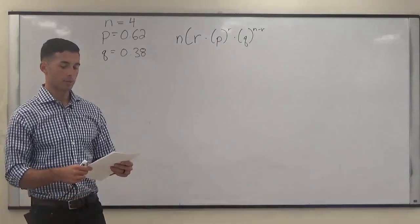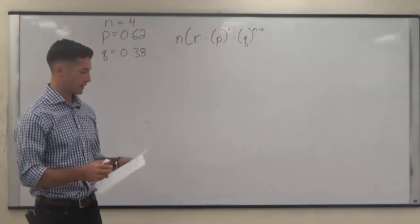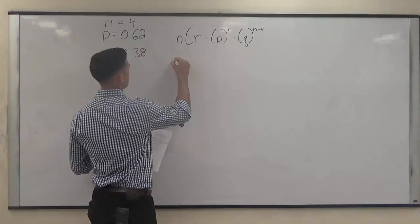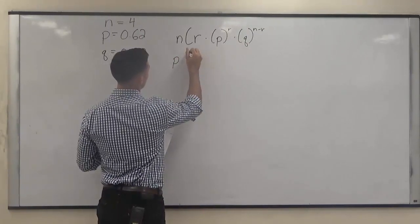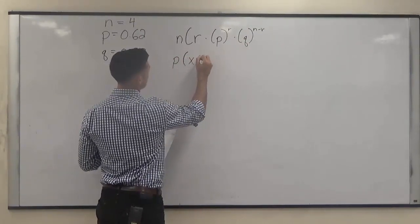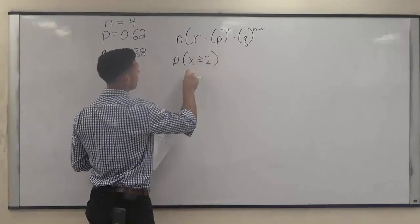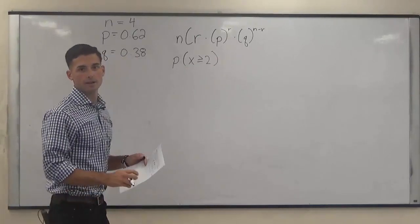Part B asks for the probability that at least two of these women surveyed respond yes. So this one's going to be a little bit different. It's asking for the probability that X is greater than or equal to 2, so the probability that two or more women in this survey respond yes.